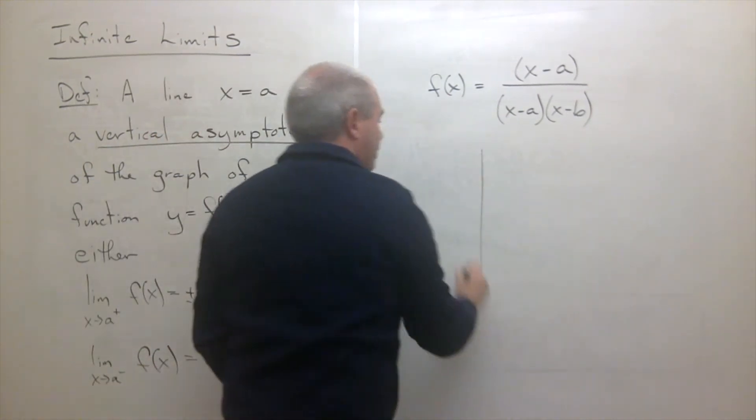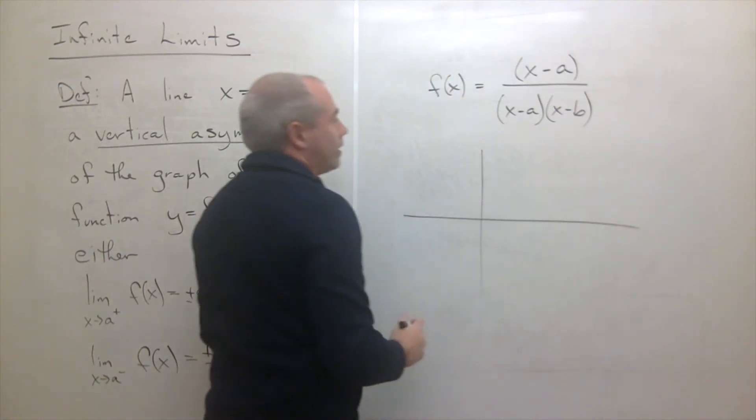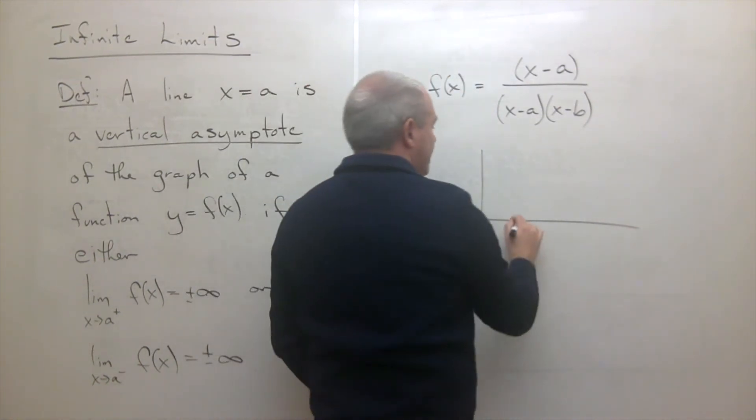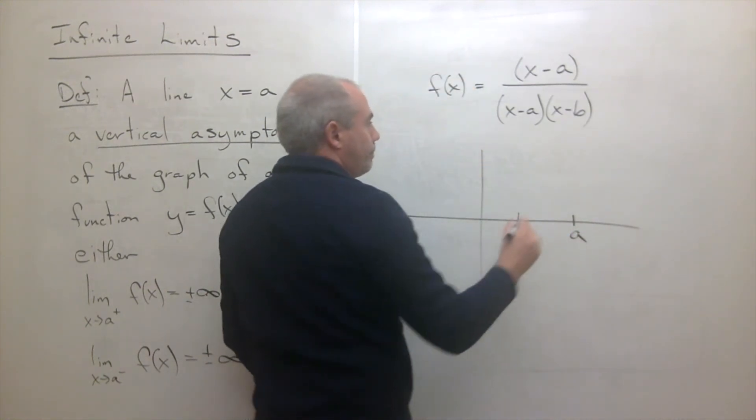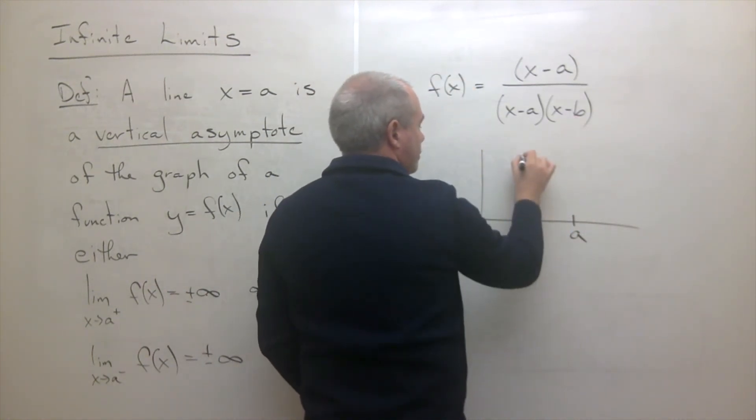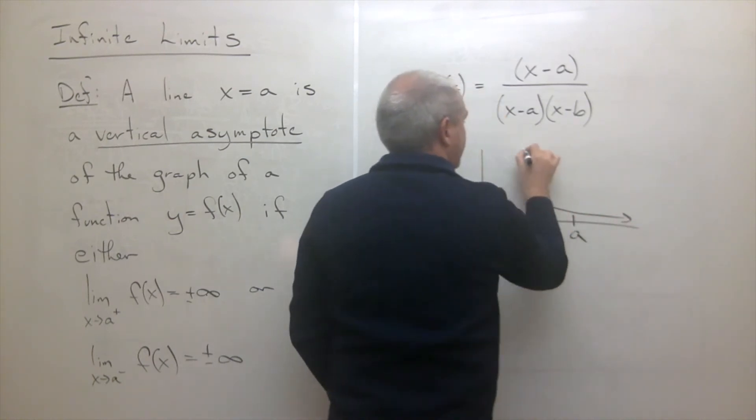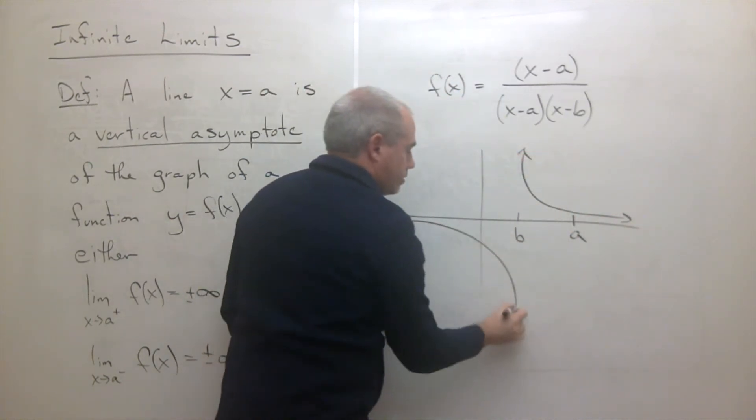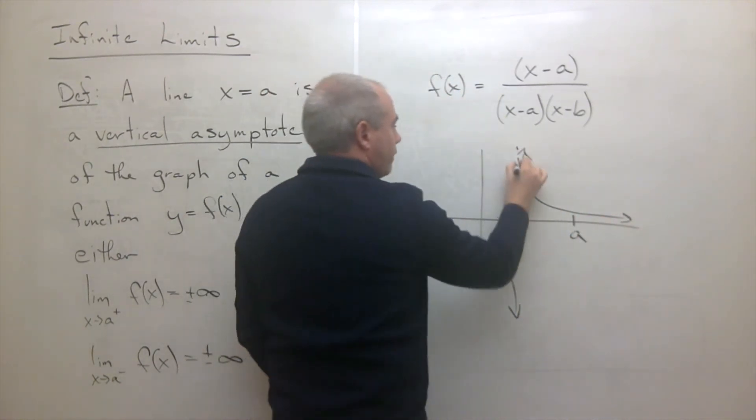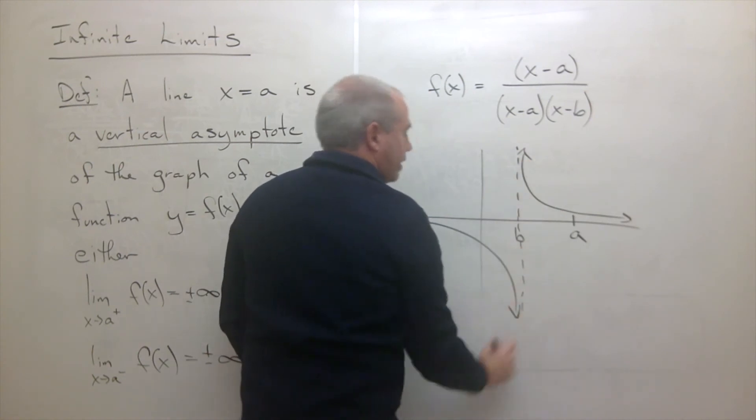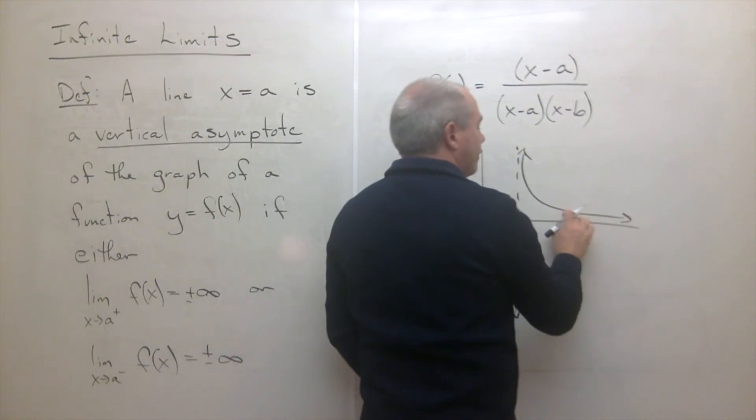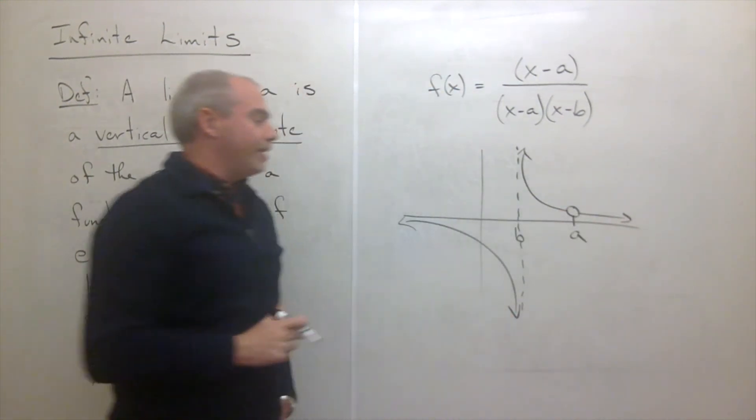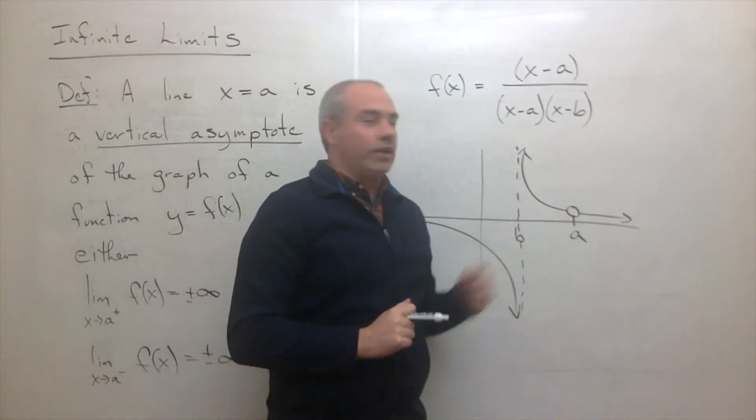So let me draw this real quick. And let's say that b is right here, and let's say a is over here. Well, at b, I have a vertical asymptote. So I'm just going to draw that the function looks something like this. So I have a vertical asymptote at b. And at a, I also get division by zero. But all that's really happening at a is there's a hole at a.